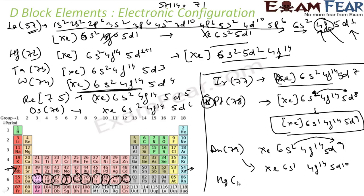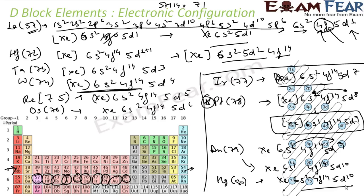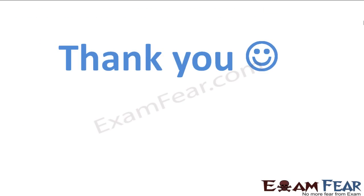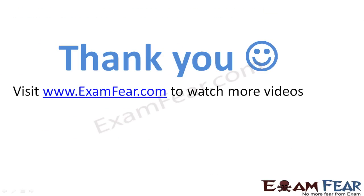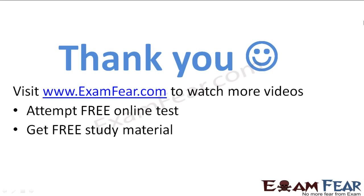Similarly, the next element is mercury Hg. This is pretty simple, so you have 80. 70 electrons are taken care by xenon 6s² and 4f¹⁴. The next 10 electrons go in 5d¹⁰. Thank you, visit examfear.com to watch more videos, attempt free online tests, get free study materials, find tutors and mentors, and much more. Thanks once again.